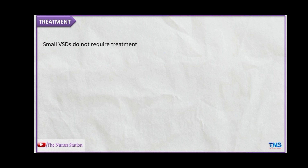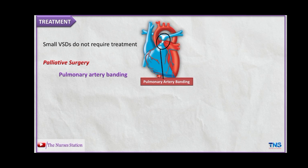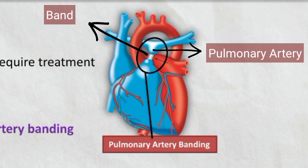Small VSDs do not require treatment because they are asymptomatic. Treatment for large VSDs may include palliative surgery such as pulmonary artery banding, with the goal of reducing pulmonary artery pressure and excessive pulmonary blood flow. A band is wrapped around the main pulmonary artery and fixed.